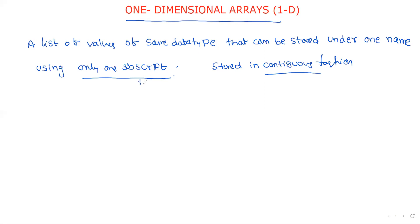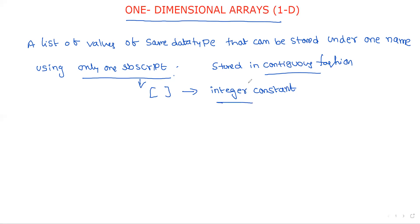The subscript is represented using square brackets, and the subscript must be an integer constant. By integer constant we mean a fixed integer value. Even if an integer variable is assigned a value, or if it is an integer expression, after evaluating the expression the final value of the subscript must be an integer.